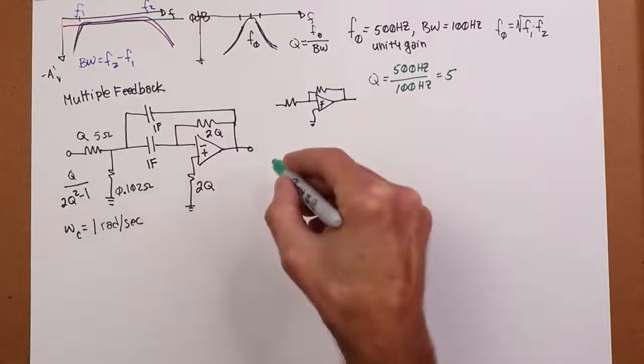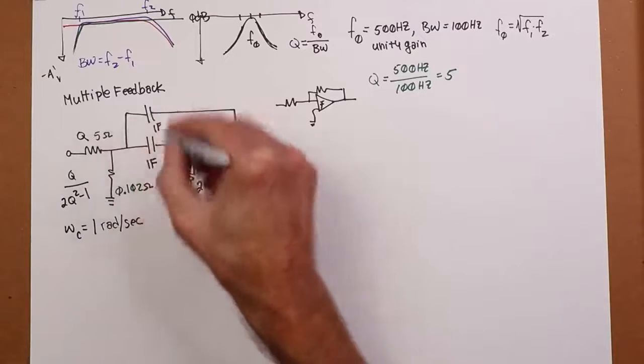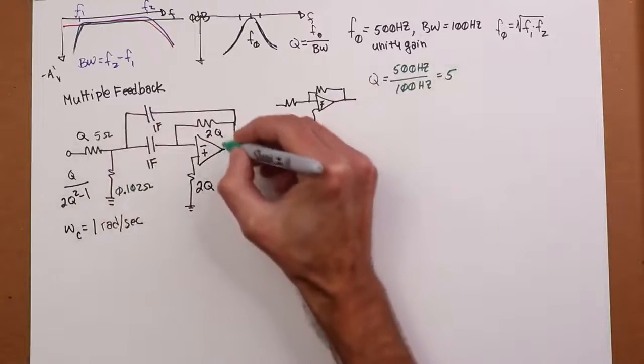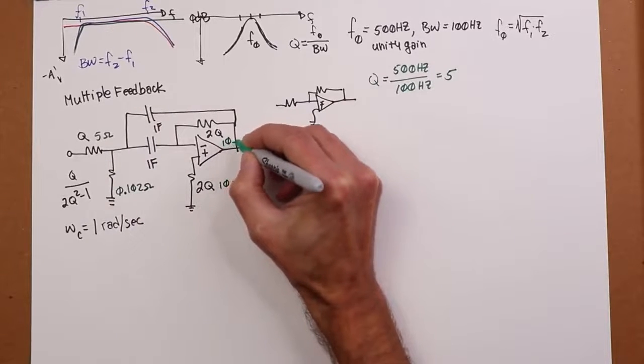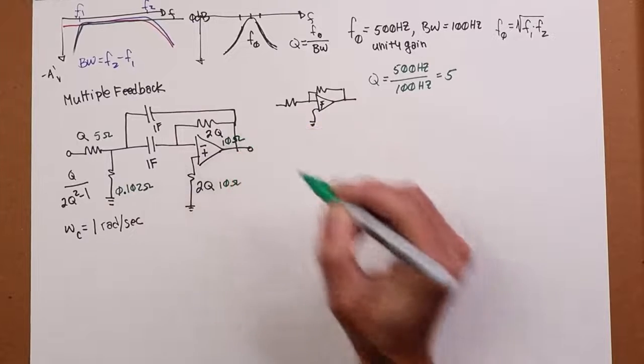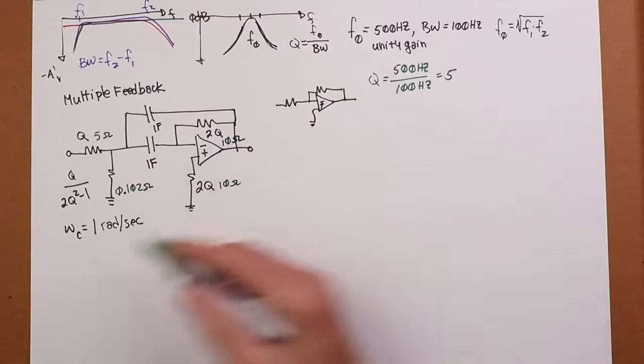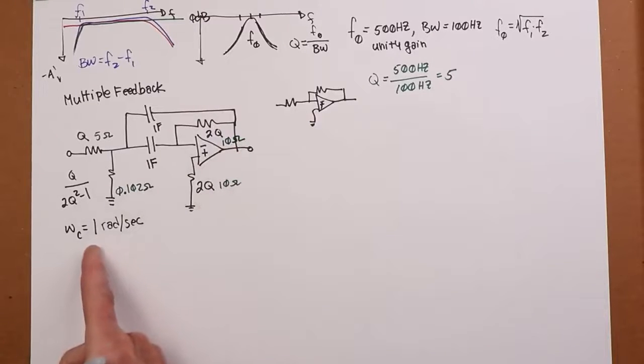So I'm just going to take that Q of 5, plug it in here, and see what I get. So when I do that, this obviously becomes 5 ohms, and then 5 divided by basically 49. Q squared, 25 times 2 is 50 minus 1 is 49. That's going to work out to 0.102 ohms. Can't forget these two guys. They turn into 10 ohms. So this green version essentially is a 1 radian per second center frequency with a Q of 5.